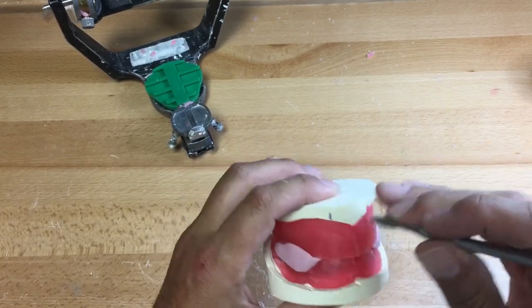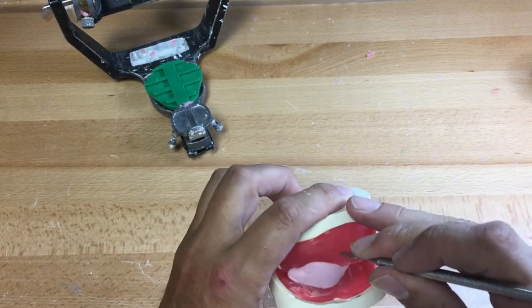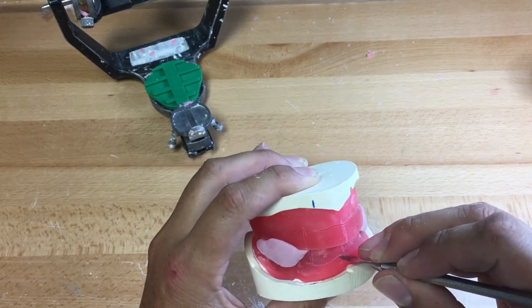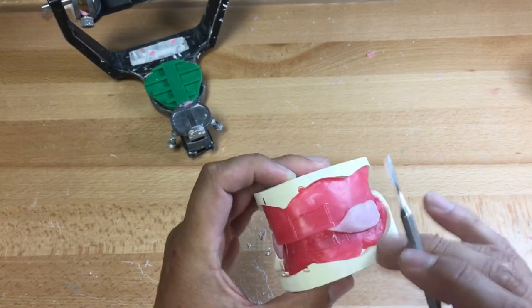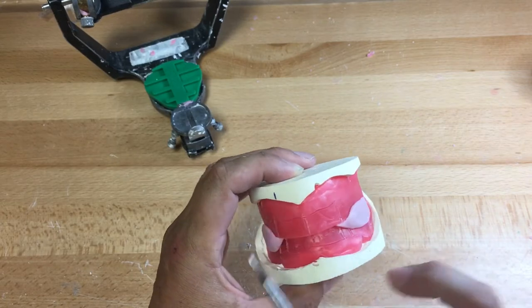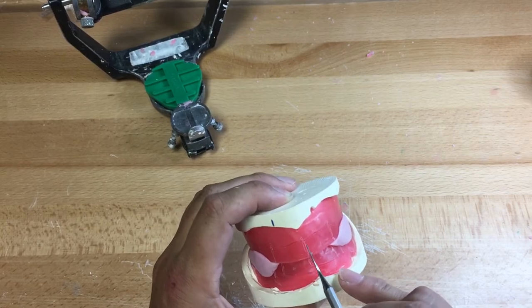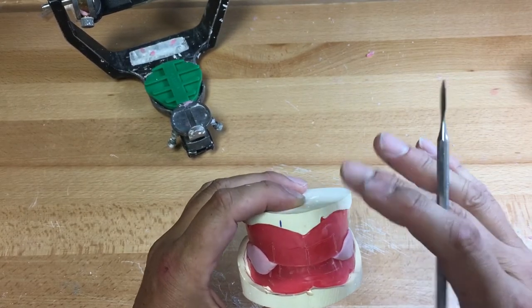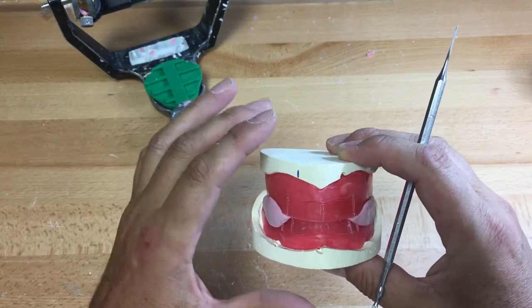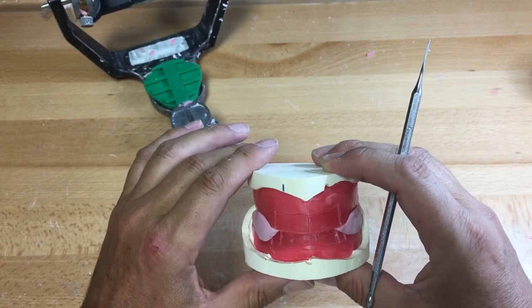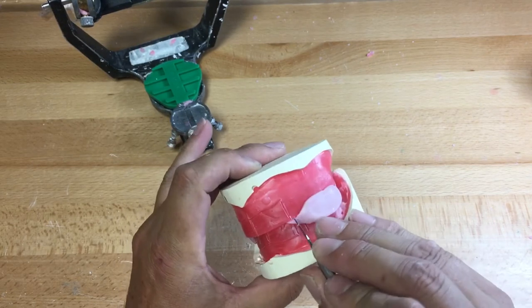So what we should have received back from the dentist is the midline, which you can see here is marked. The cuspid line, which is usually the alla of the nose brought down depending on the smile opening. And the midline is brought down onto the lower.